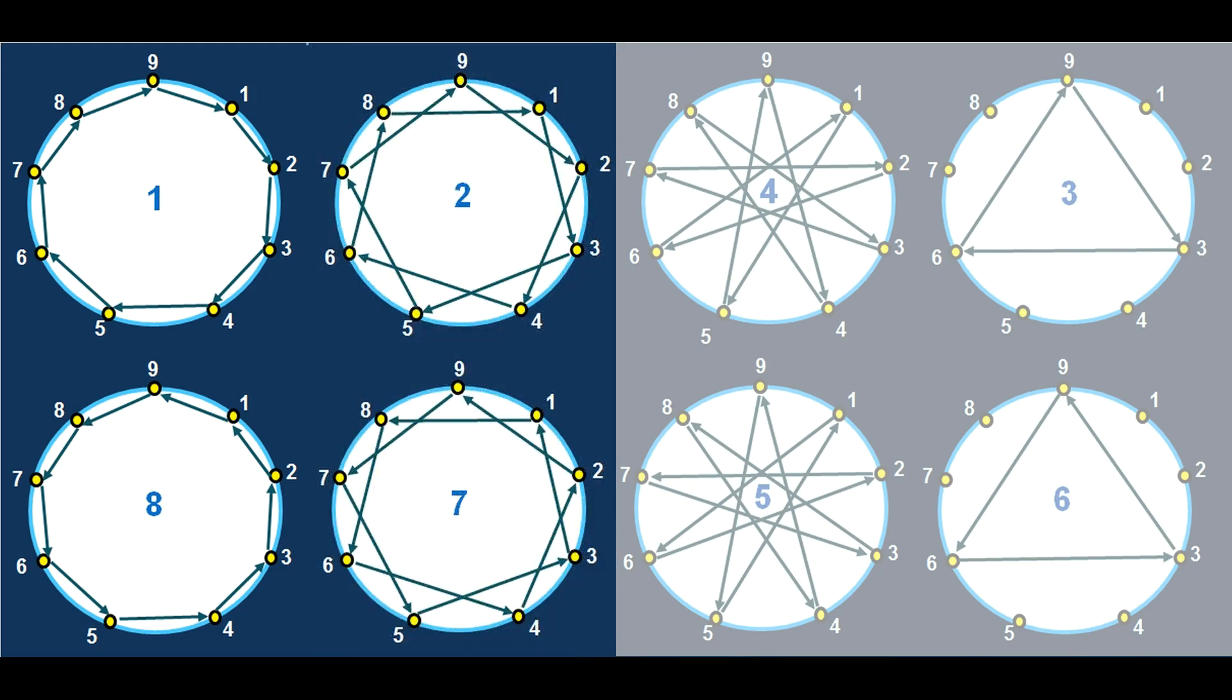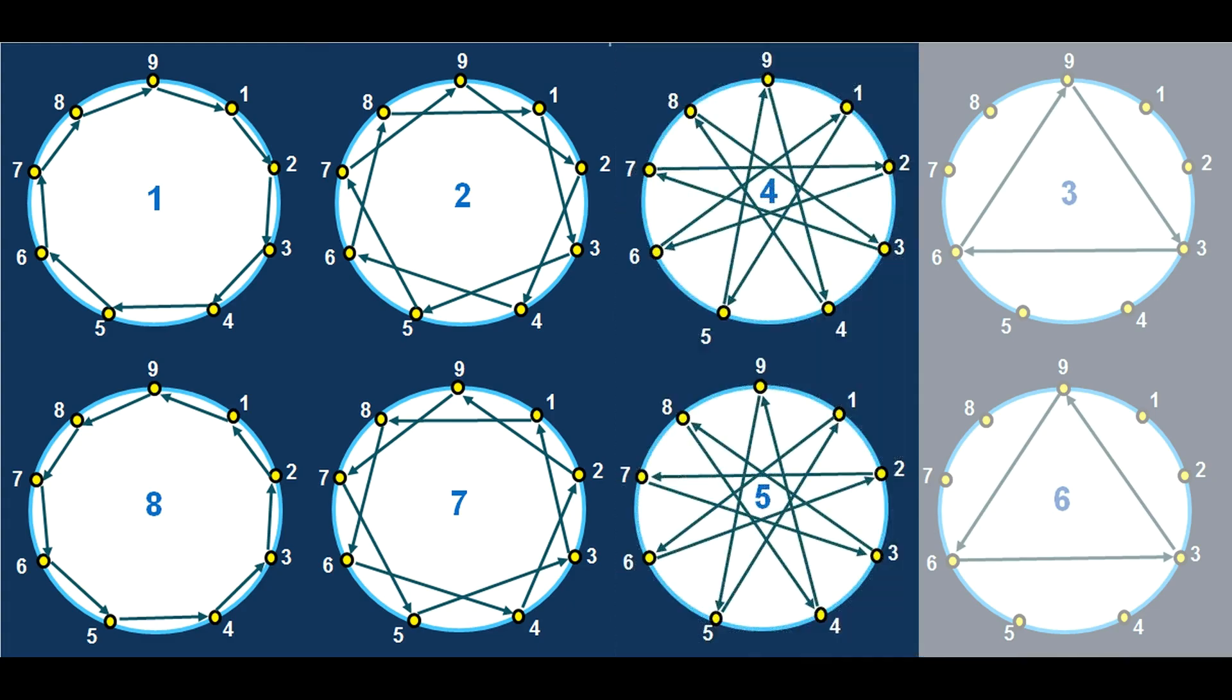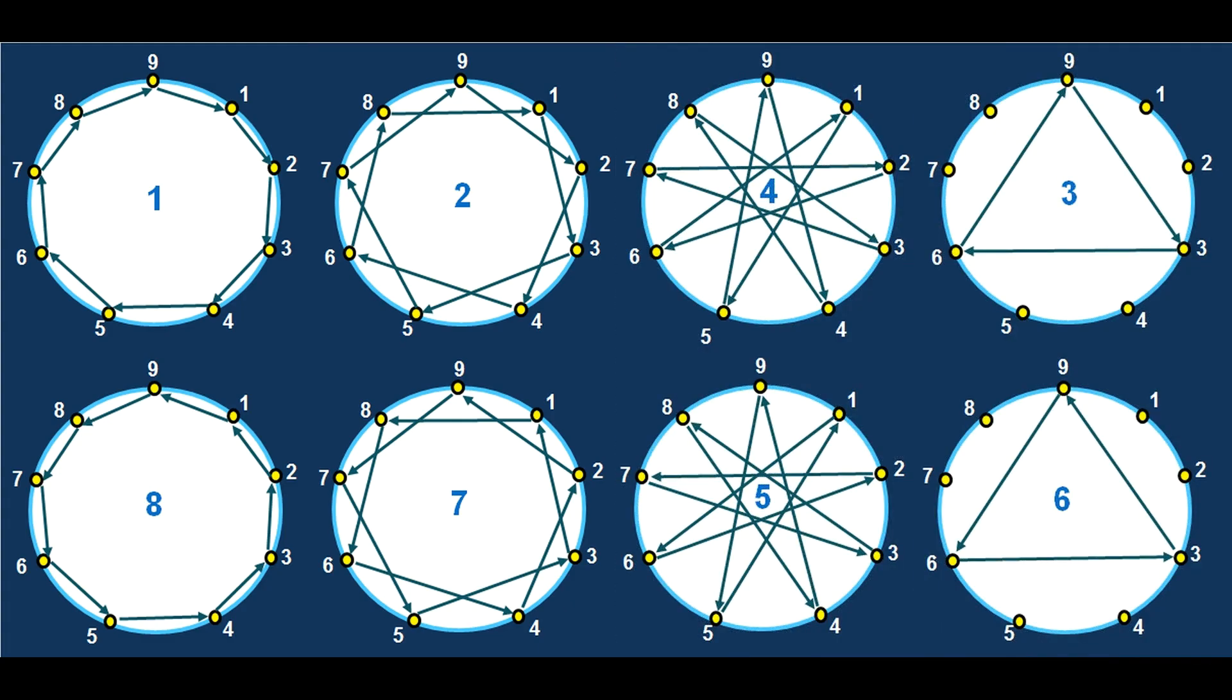And then I discovered that basically the 2 and the 7 are paired in their same geometries, 4 and the 5 and the 3 and the 6. And so they're paired in their geometries, but they're also reflective, because the 1 goes clockwise, and the 8 goes anti-clockwise. The 2 goes clockwise, the 7 goes anti-clockwise.